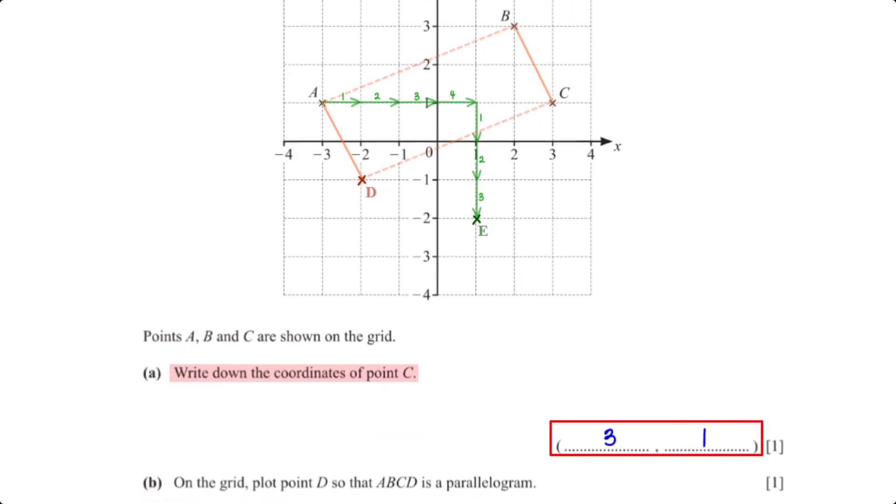On the grid, plot point D so that ABCD is a parallelogram. For ABCD to be a parallelogram, we plot point D here.